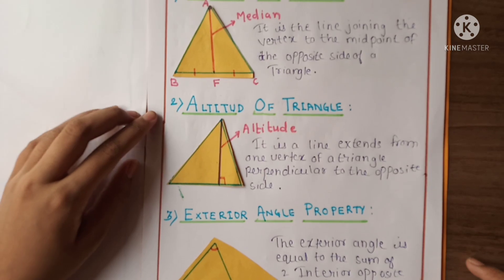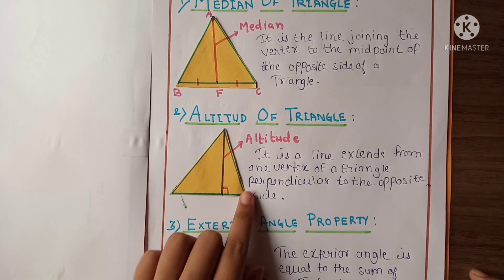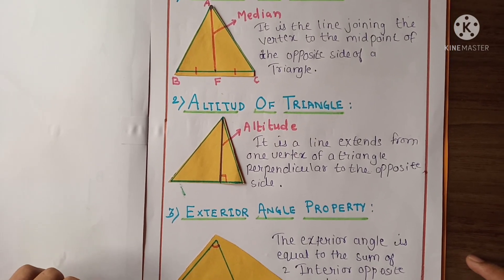Number second is the altitude of a triangle. And here is the altitude, this purple colored line. It is a line extended from one vertex of a triangle perpendicular to the opposite side.